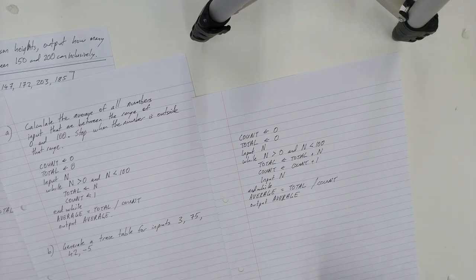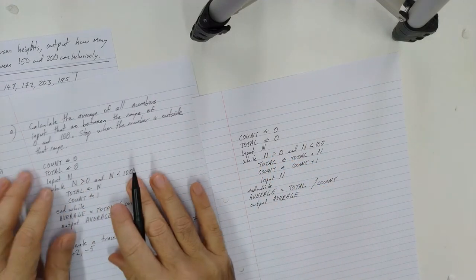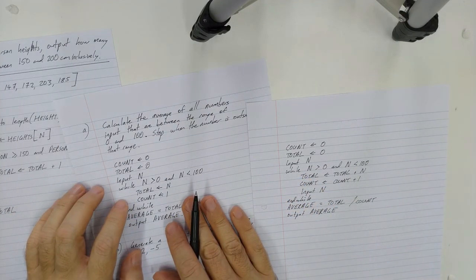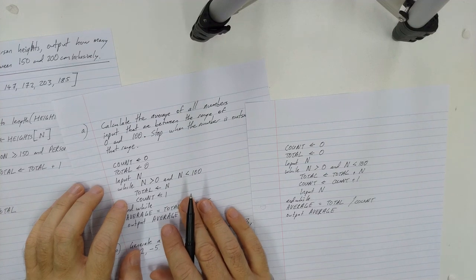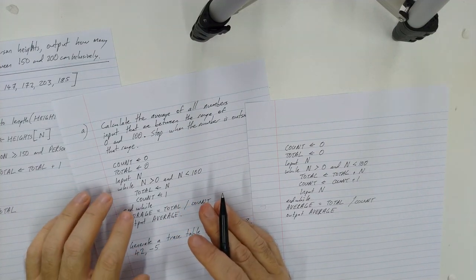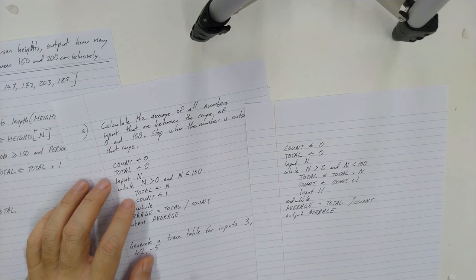Now what would happen if I was to just look at that first one and I could not spot the error? That is where trace tables come in. Trace tables are a method for us to manually test our own algorithm and where we become the computer. That will be the content of the next video.